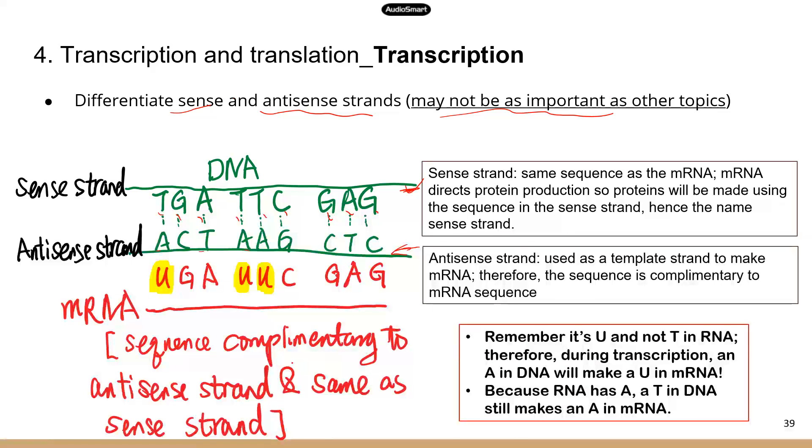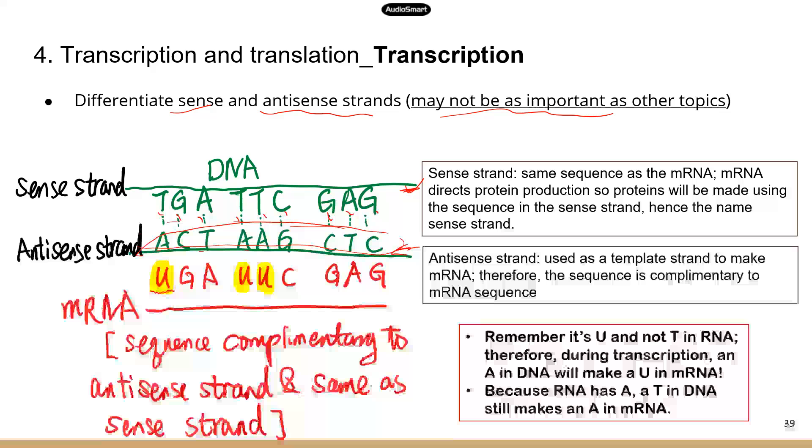Okay. Now let's say we're going to use the strand at the bottom to make messenger RNA. So again, we're going to do the base pairing. So A pairs with U. And remember, there are no T's in mRNA. So it has to be U. C pairs with G. That's the same. Nothing changes. T pairs with A. So you figure out the right sequence, which is the sequence for the messenger RNA.